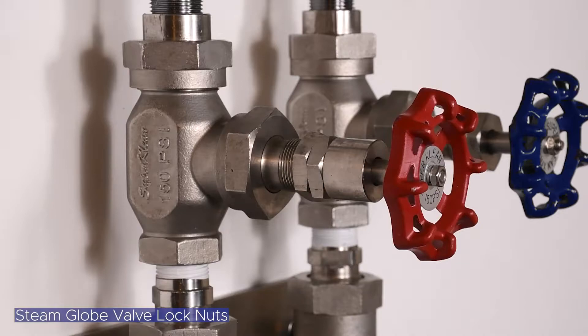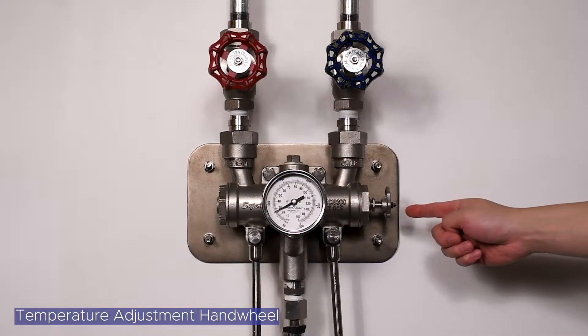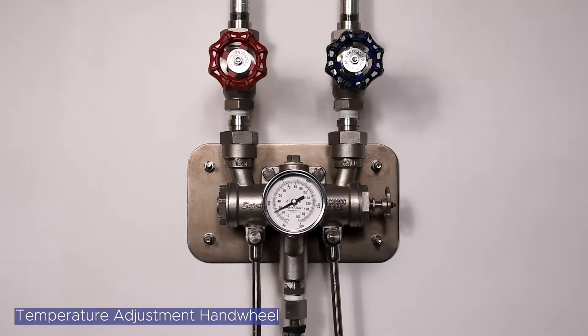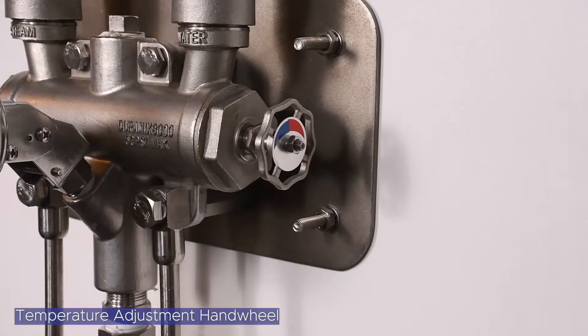The lock nuts do not need to be adjusted unless your desired steam pressure changes. The temperature adjustment hand wheel is located to the right of the temperature gauge and is used to make fine adjustments to the temperature output. The temperature hand wheel does not need to be adjusted unless your desired temperature output changes and should not be touched during everyday operation.